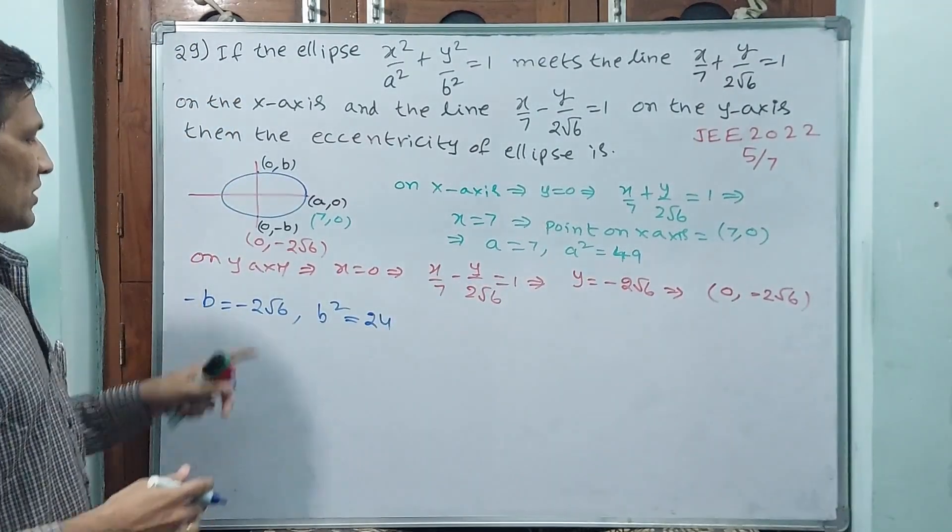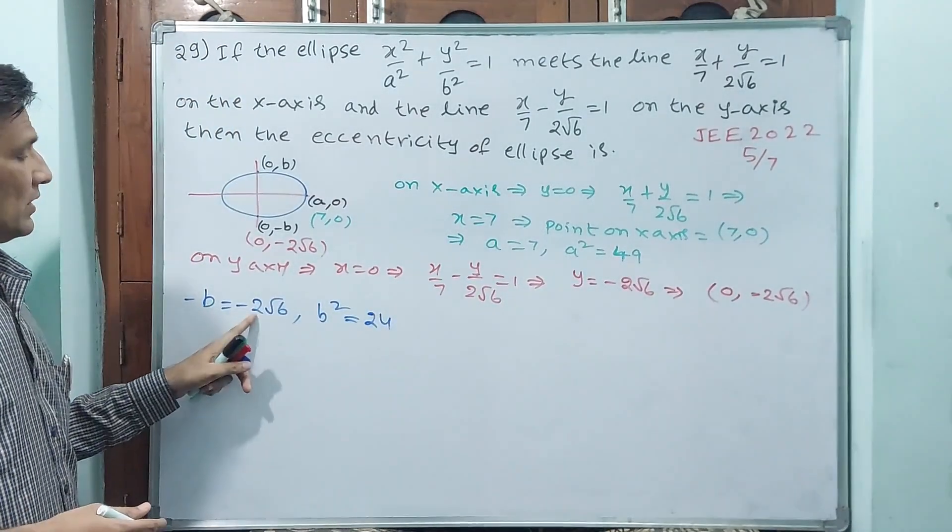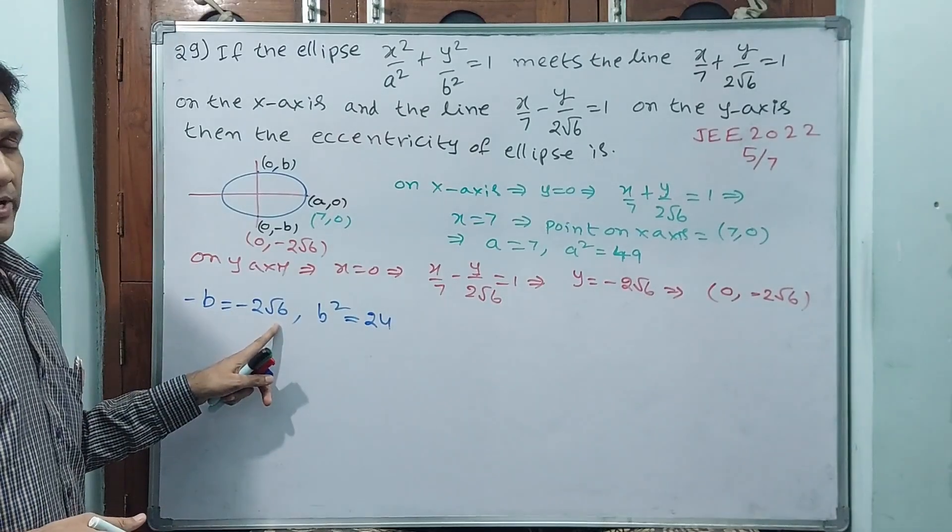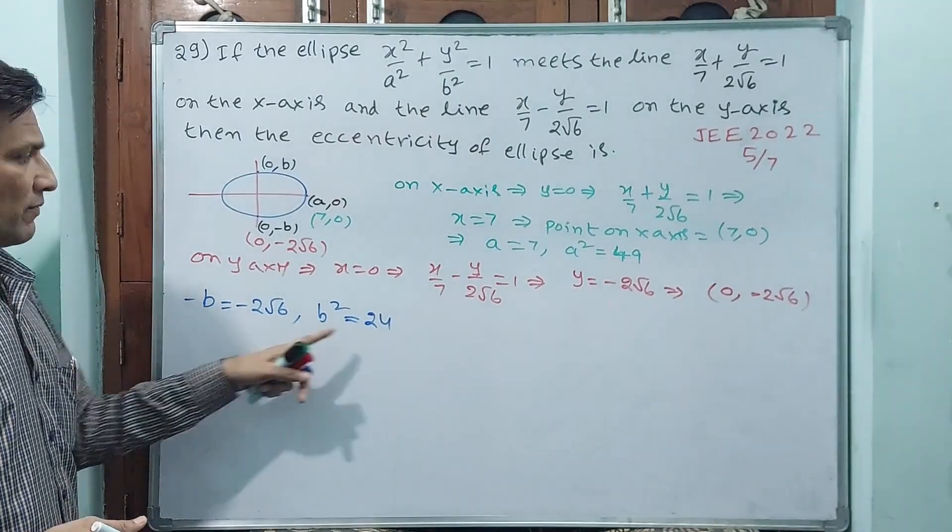This is 24. Why? Because 2² is 4, √6 squared is 6, 6 × 4 = 24.